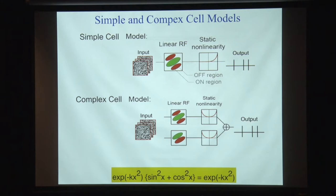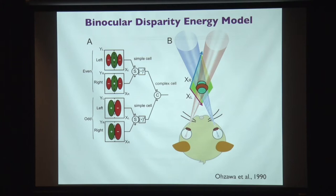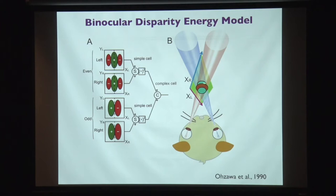If you extend this to the binocular case, it's just adding left eye and right eye. Previously it was just one eye, but now we have two eyes linearly converging onto a simple cell and then squaring — essentially the same model. That organization gives you a three-dimensional Gabor function, which is the binocular three-dimensional receptive field of a particular complex cell.